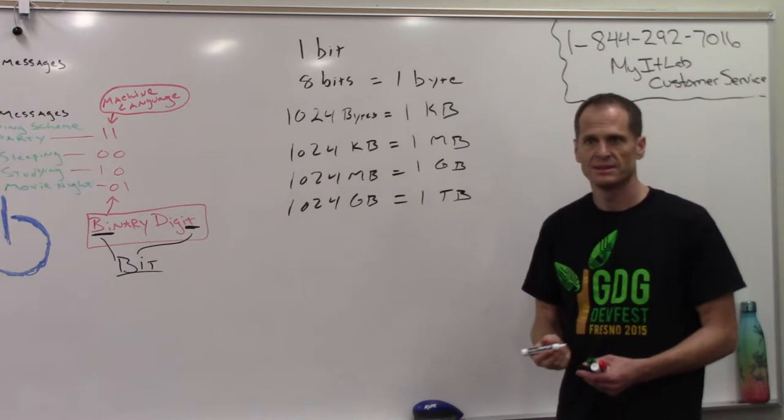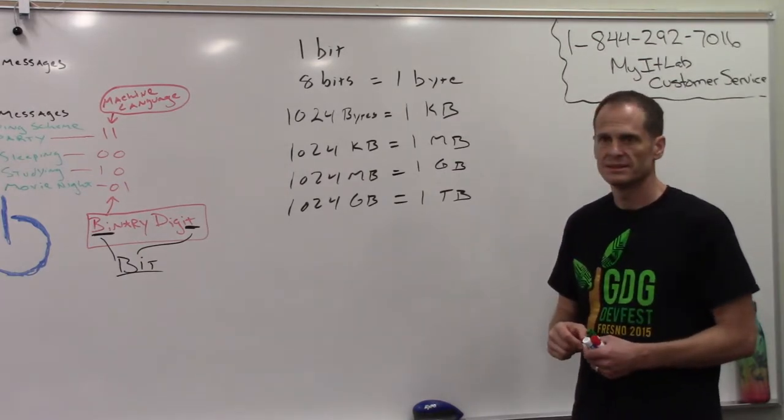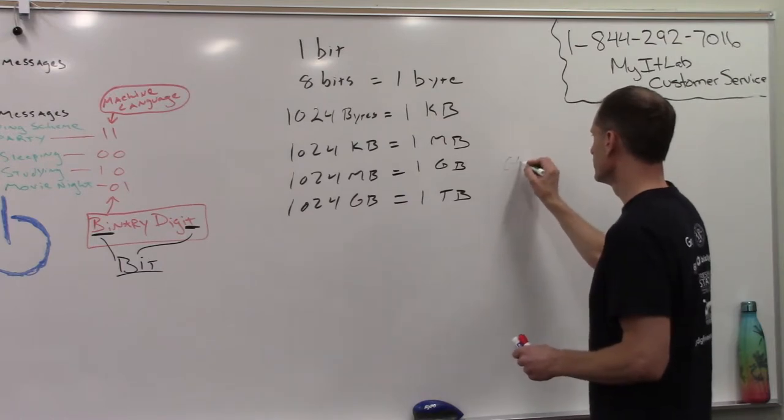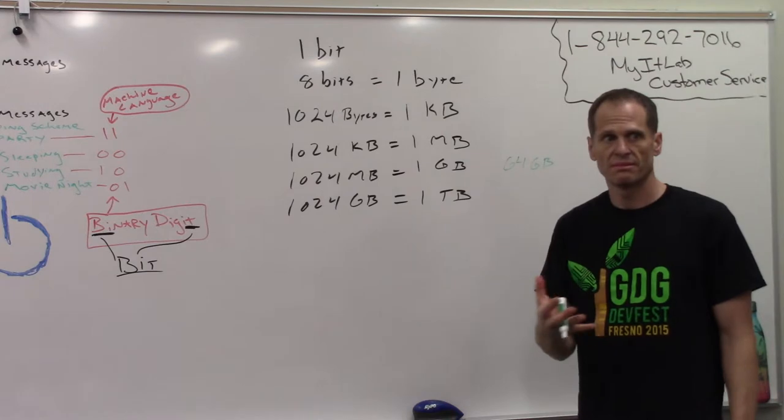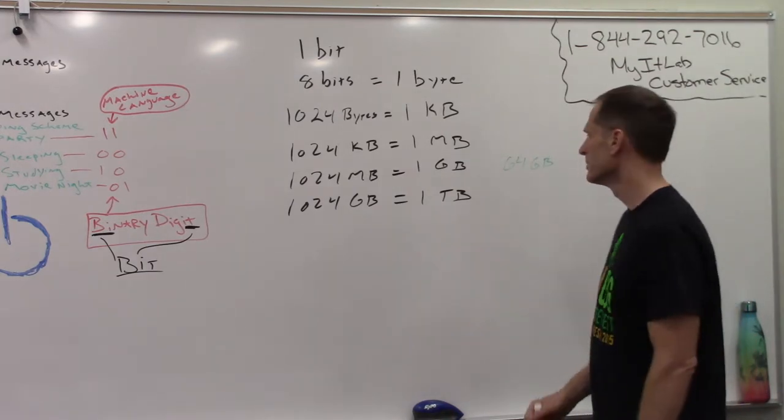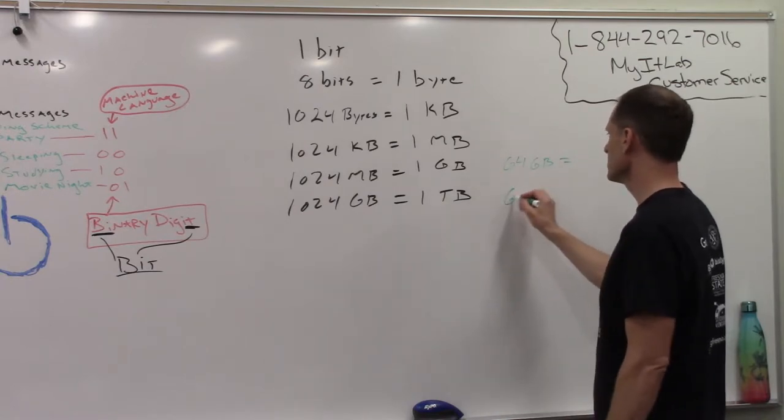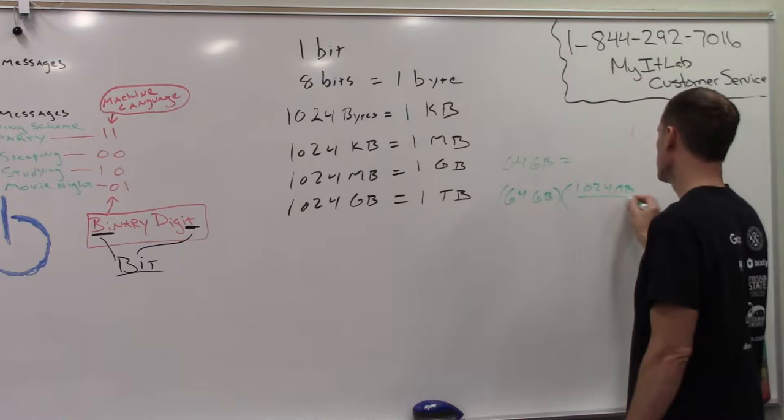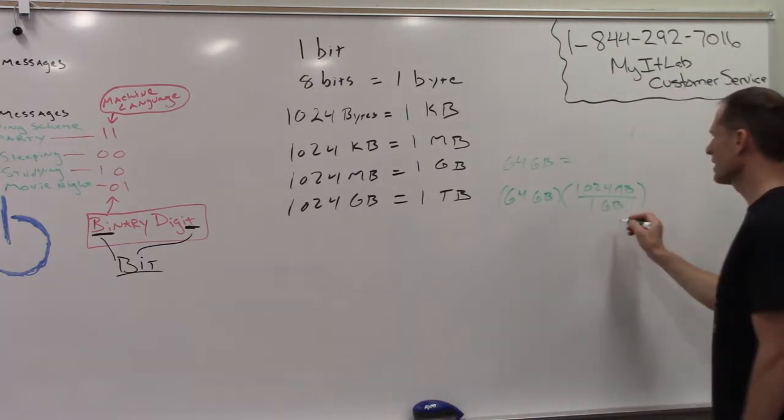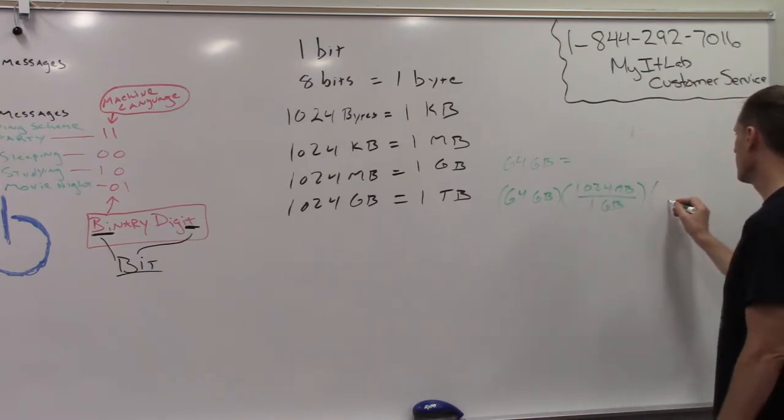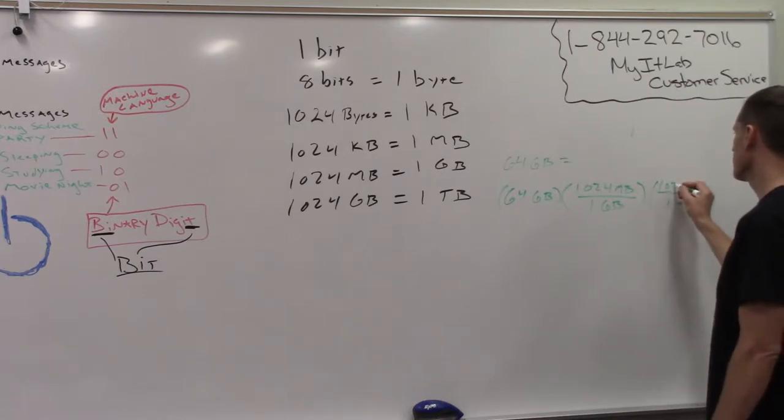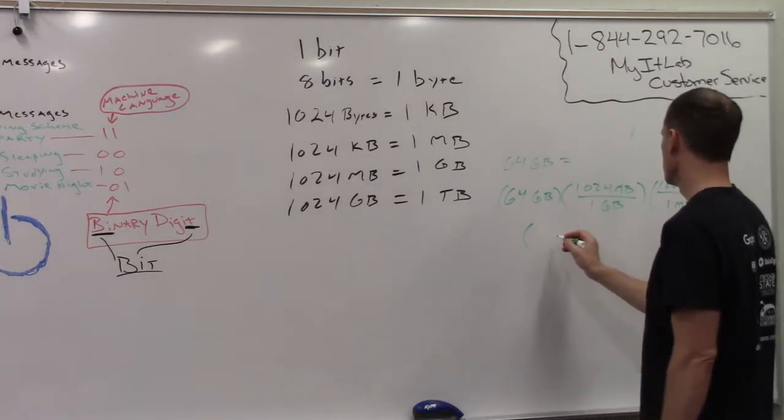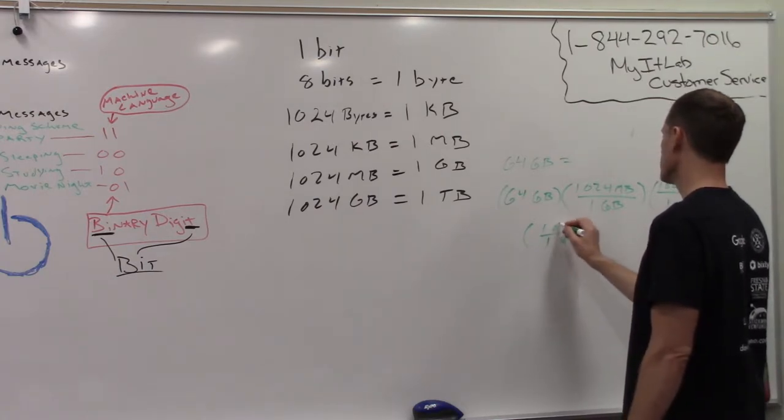So if I have a 64 gigabyte SD card, that's equal to, instead of gigabytes, I can do 64 gigabytes times 1,024 megabytes is 1 gigabyte. So that cancels, and it's 64 times 1,024. And then 1 megabyte is equal to 1,024 kilobytes. And then 1 kilobyte is equal to 1,024 bytes.